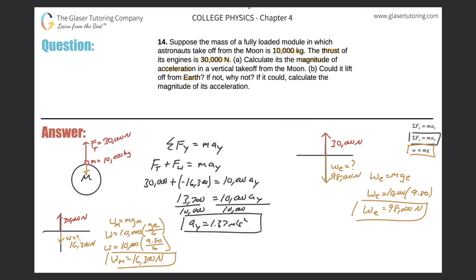Just look at your free body diagram. The net force is going to be pointing down. When you sum these two forces together, the net force is negative — pointing down. If the net force points down, the acceleration also points down. Therefore it cannot lift off: it doesn't have a positive acceleration in the positive y direction. Thanks for tuning in — hopefully this helped. Please hit the subscribe button, and I'll see you in the next lesson.